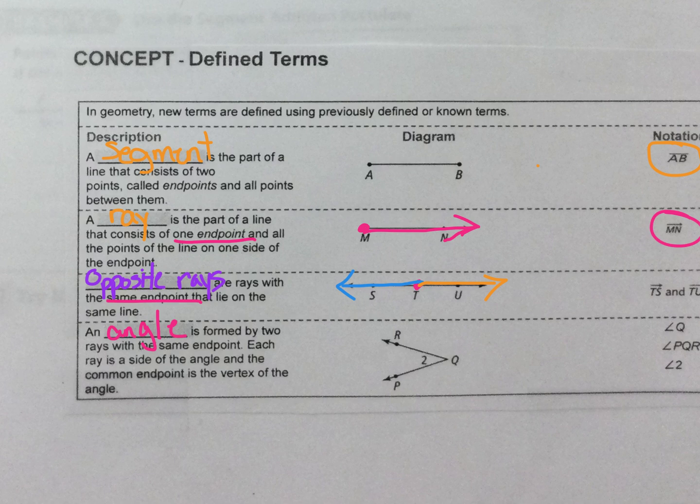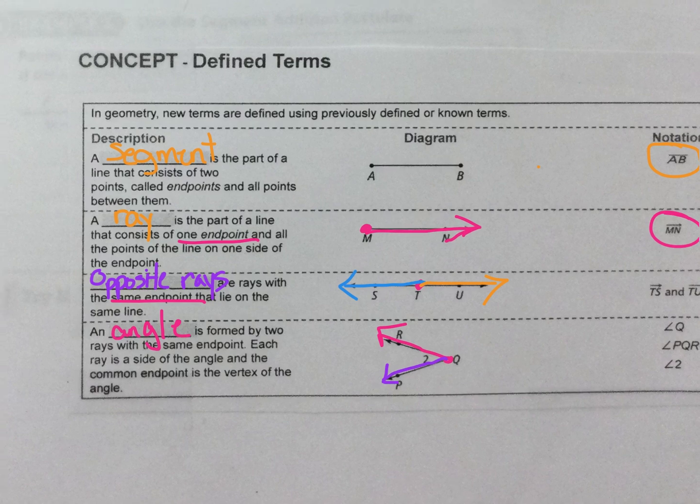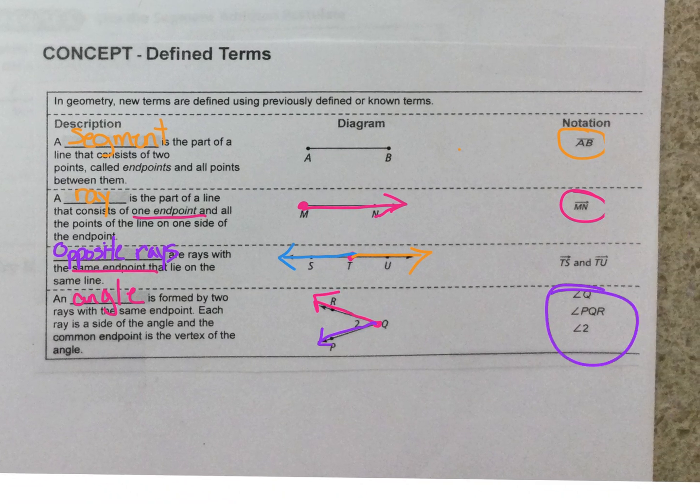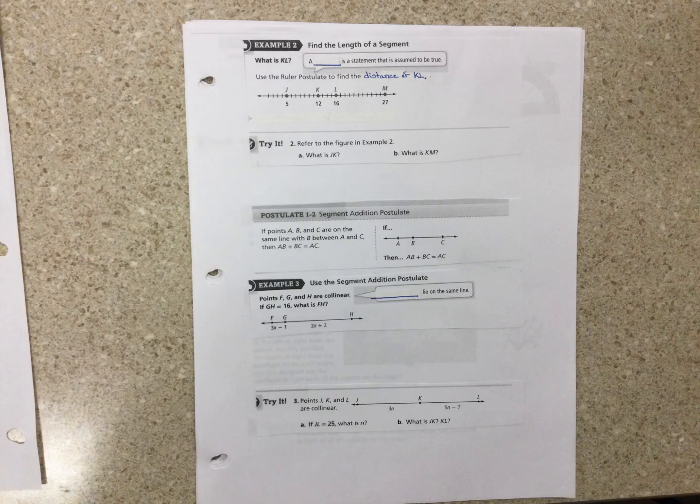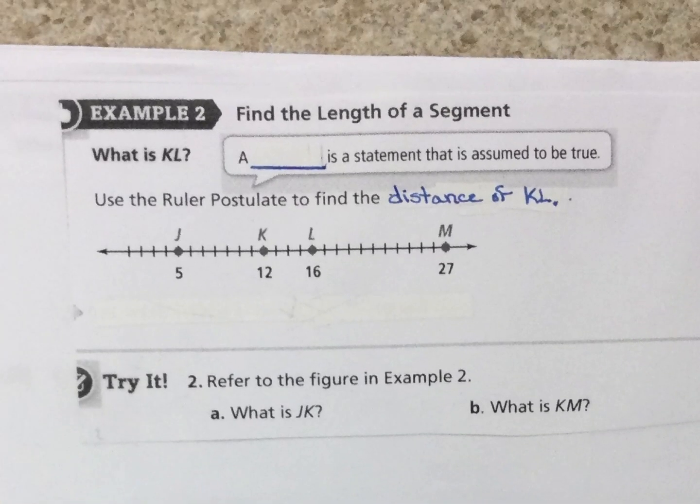So here's a ray and here's a ray, and you can see how we name angles.